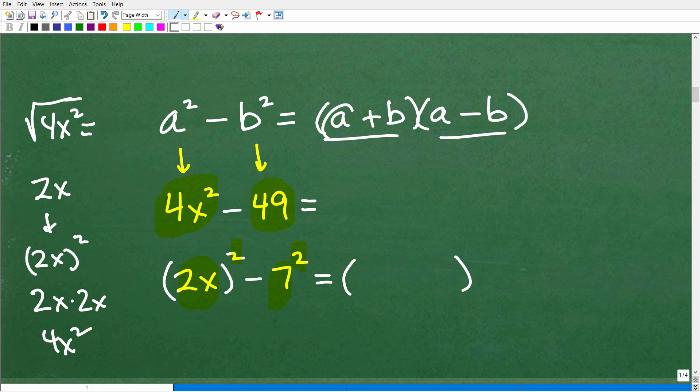So what is my a here? What is being squared? That's 2x, so I have to write a 2x plus 7. So again, my a here is 2x, and my b is 7. So that's going to be 2x plus 7 times 2x minus 7. And there you go. These are the factors, 2x plus 7 times 2x minus 7.